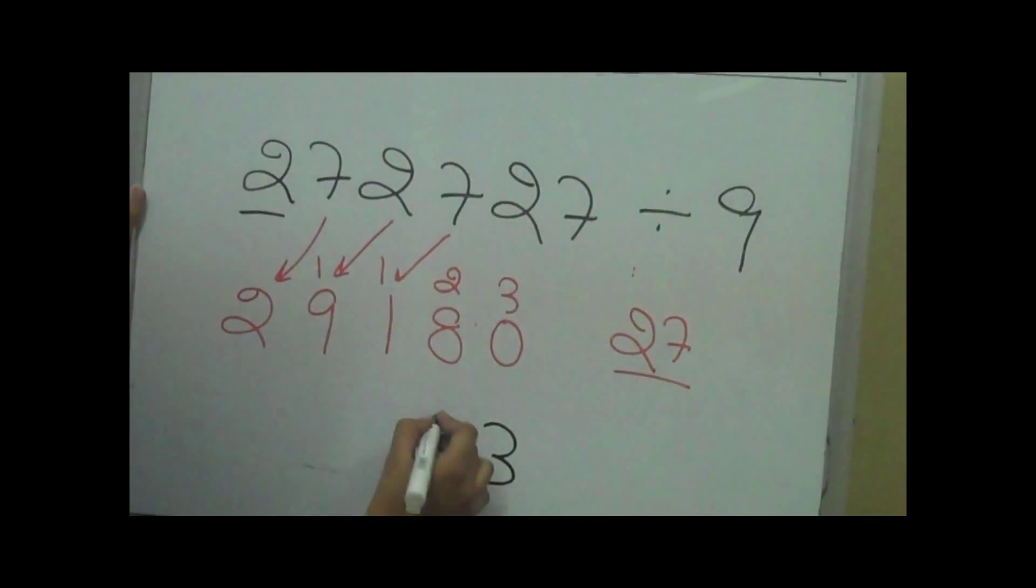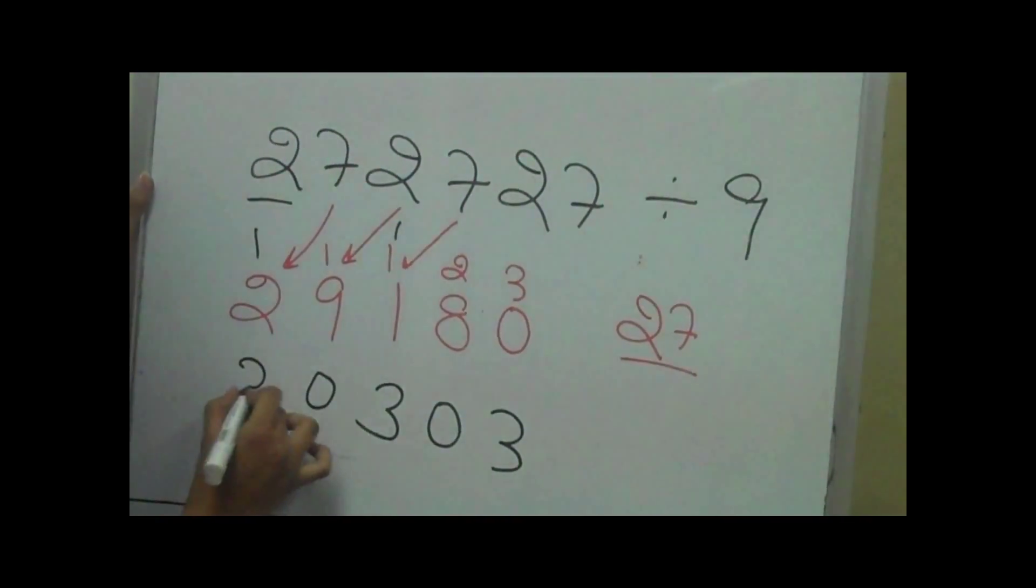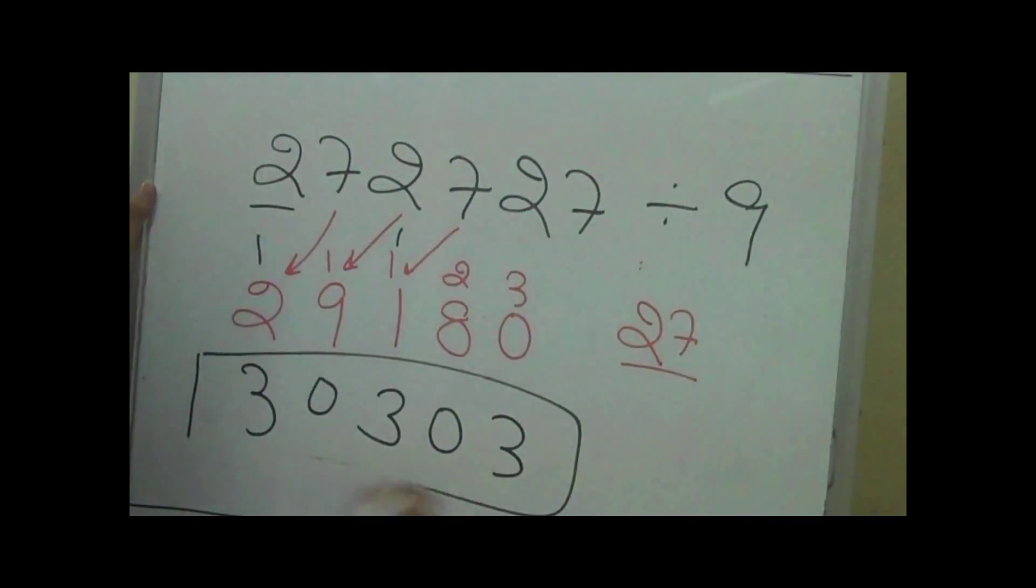It becomes 3, 10, 1, 3 again. 10, 1, 3, 0, 3, 0, 2 as the answer.